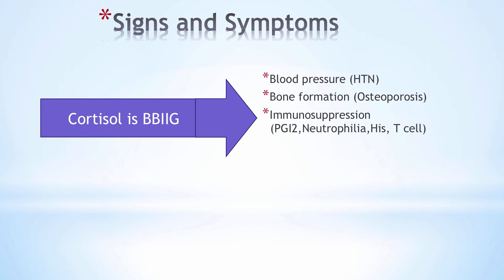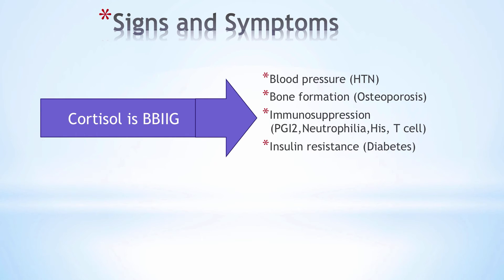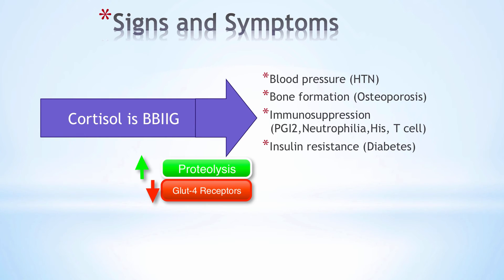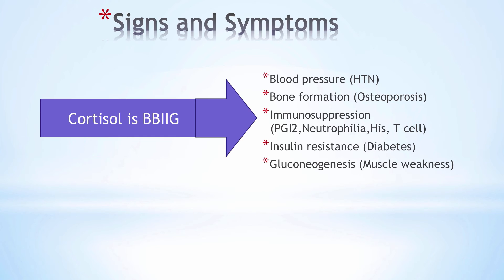Regarding immunosuppression, cortisol serves several roles: it downregulates eicosanoids like leukotrienes and prostaglandins, inhibits leukocyte adhesion leading to neutrophilia, blocks histamine release from mast cells, and negatively affects cytokine production — especially interleukin-2, which is important for T-cell maturation. Insulin resistance occurs because cortisol favors gluconeogenesis and proteolysis, and downregulates GLUT4 receptors to decrease peripheral glucose uptake, leading to hyperglycemia. More and more insulin must be released, and as sensitivity to insulin decreases, insulin resistance and diabetes eventually develop.